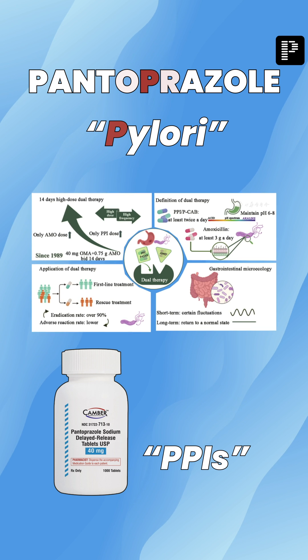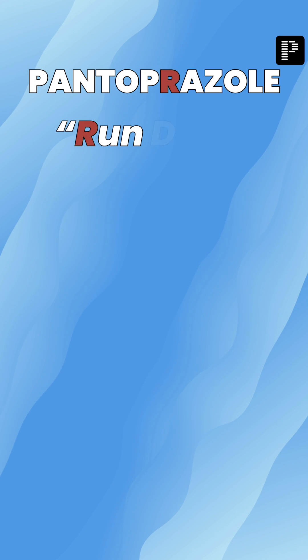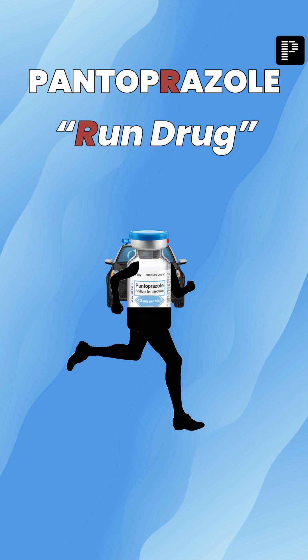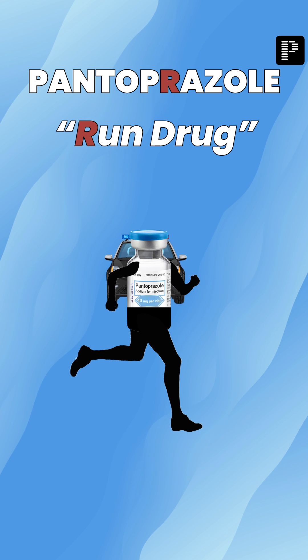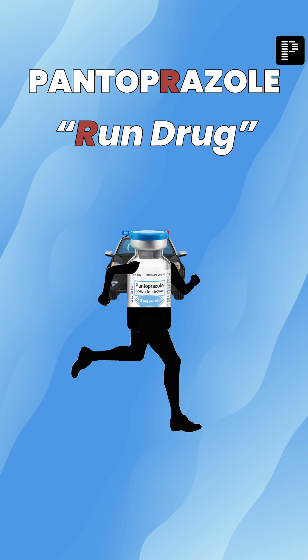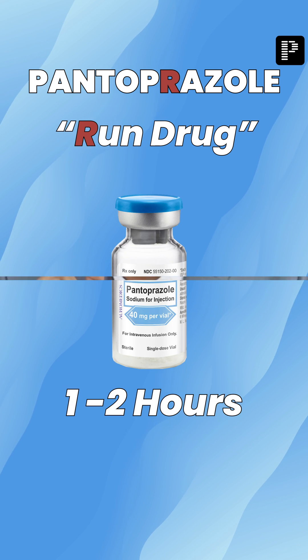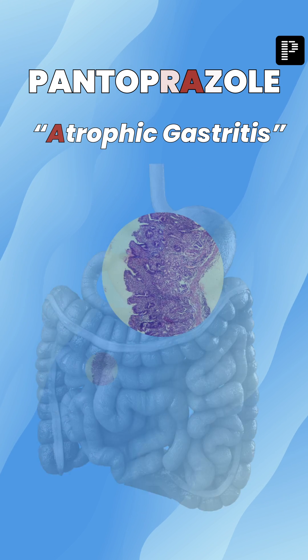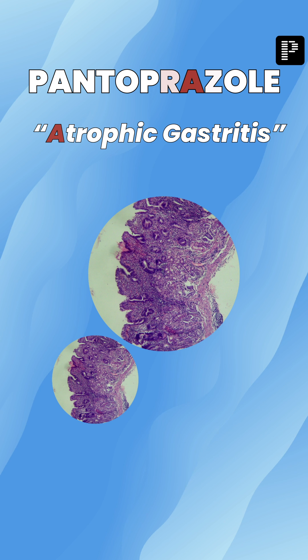The next letter is R — R for run drug. These PPIs are called hit-and-run drugs. The reason is their half-life is one to two hours, but their duration of action is long.